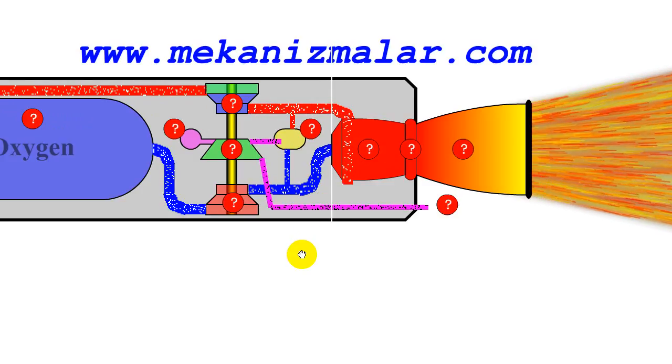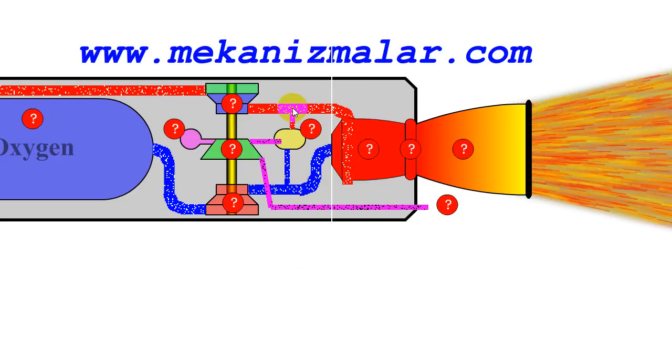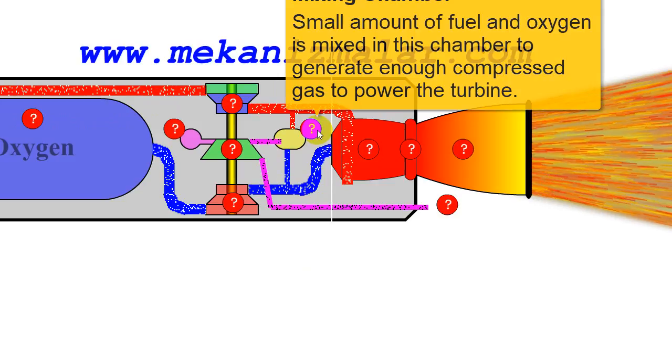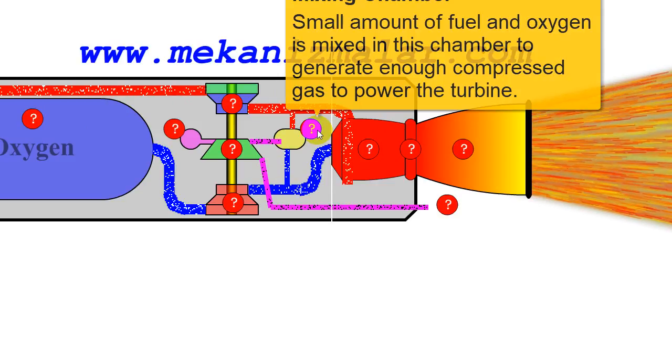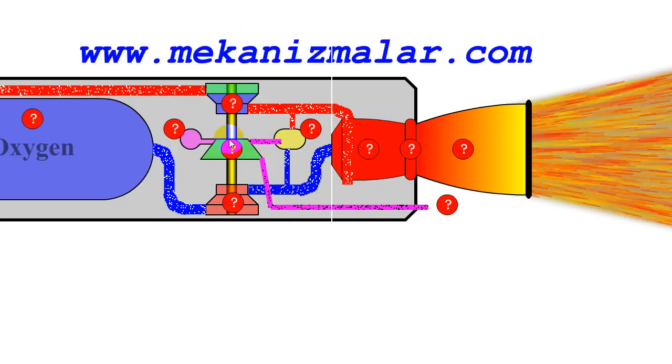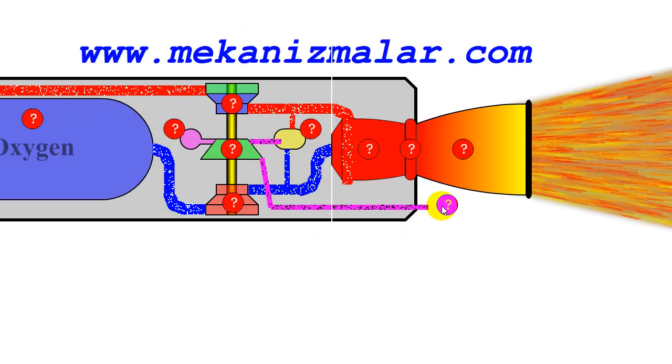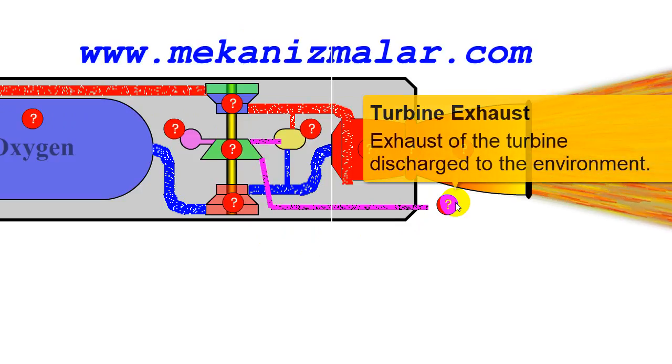At the same time, a small portion of the fuel and oxygen is diverted to the mixing chamber. Fuel and oxygen mixture is ignited inside the mixing tank to create pressurized gas to power the turbine. The outlet of the turbine is connected to the exhaust pipe to discharge the expanded gases to the environment.